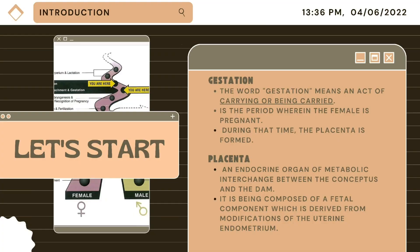To start, gestation is the period wherein the female is pregnant. The word gestation means an act of carrying or being carried. During that time, the placenta is formed. Placenta is an endocrine organ of metabolic interchange between the conceptus and the dam. It is composed of a fetal component which is derived from modifications of the uterine endometrium.